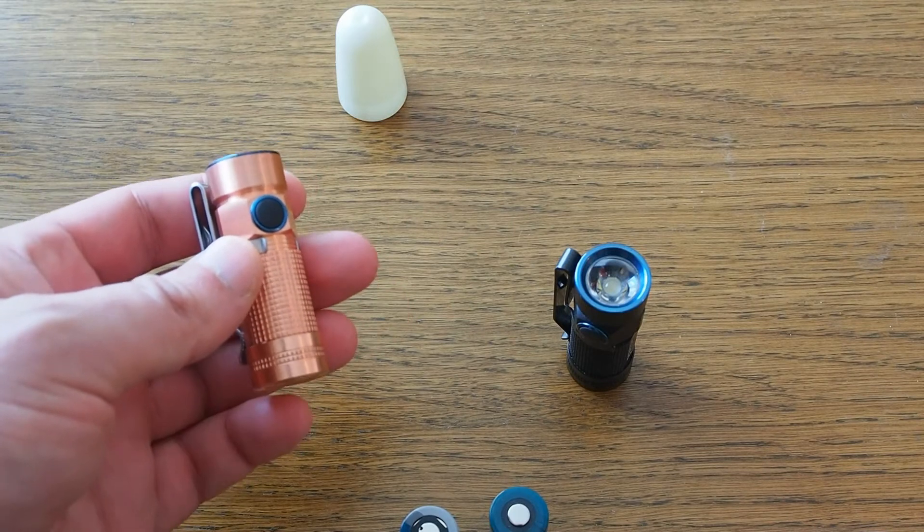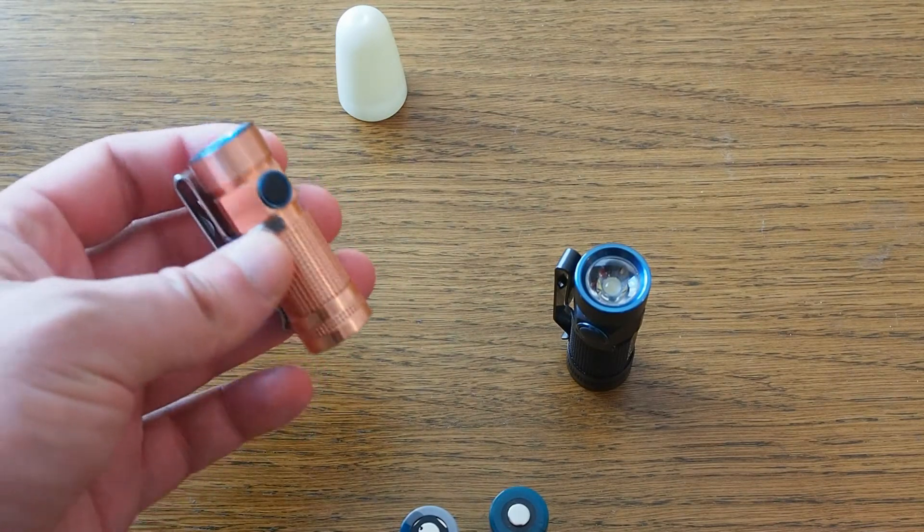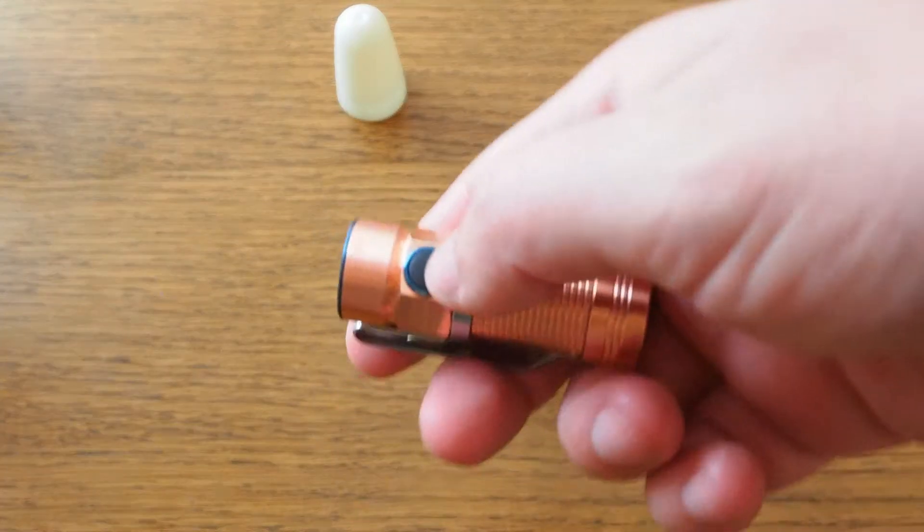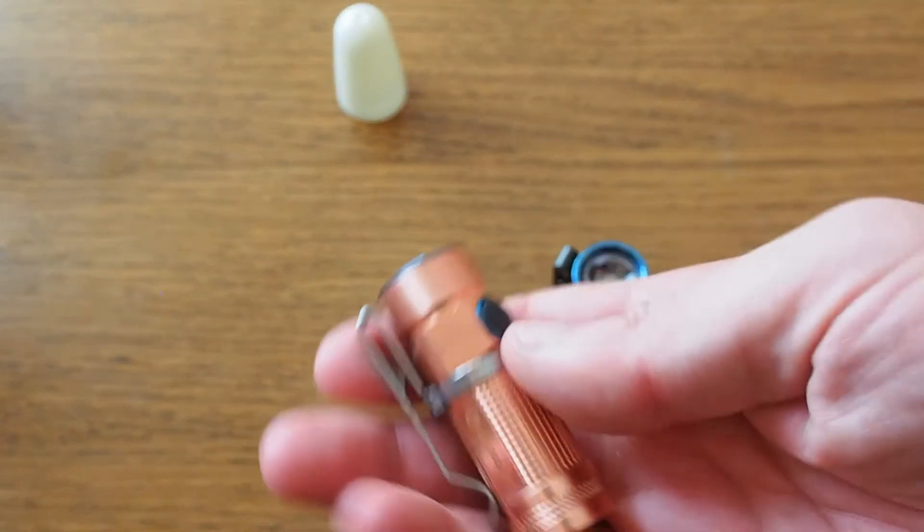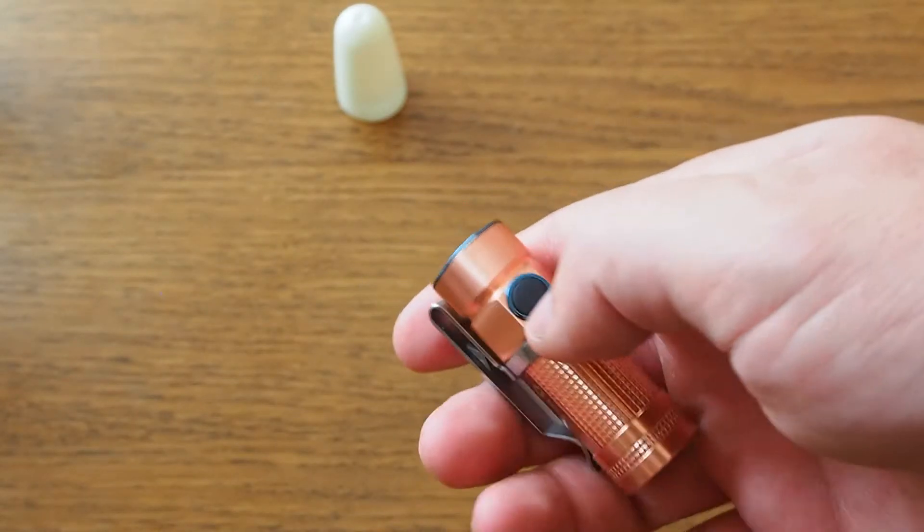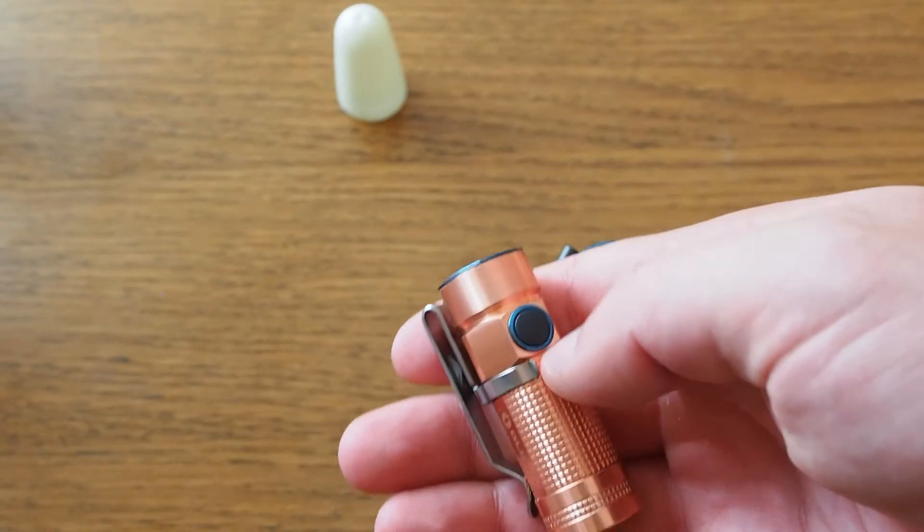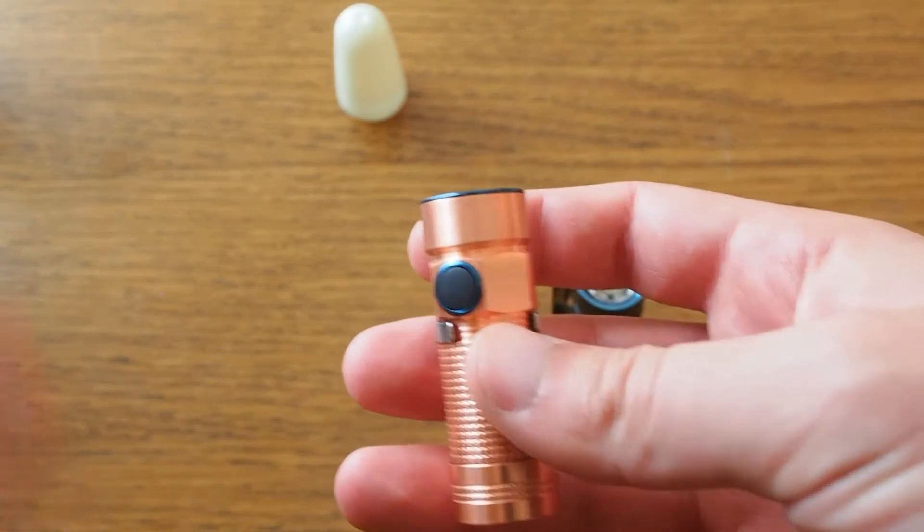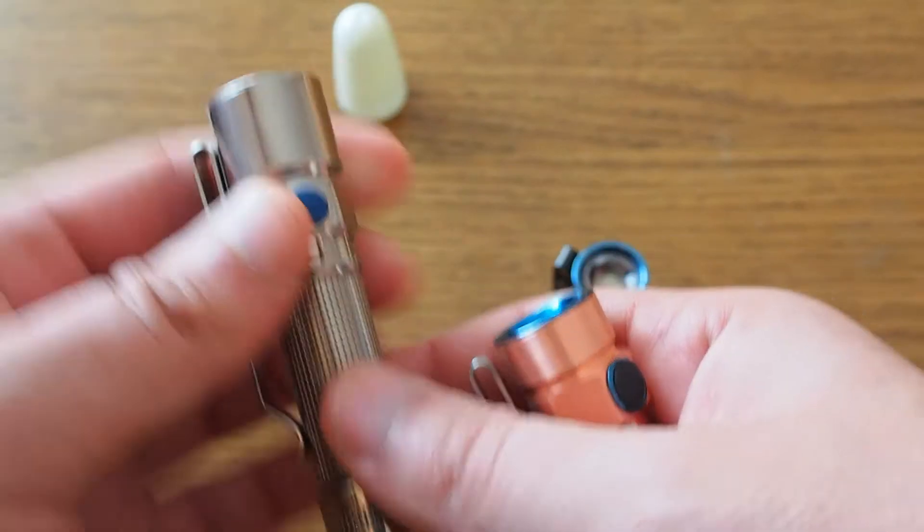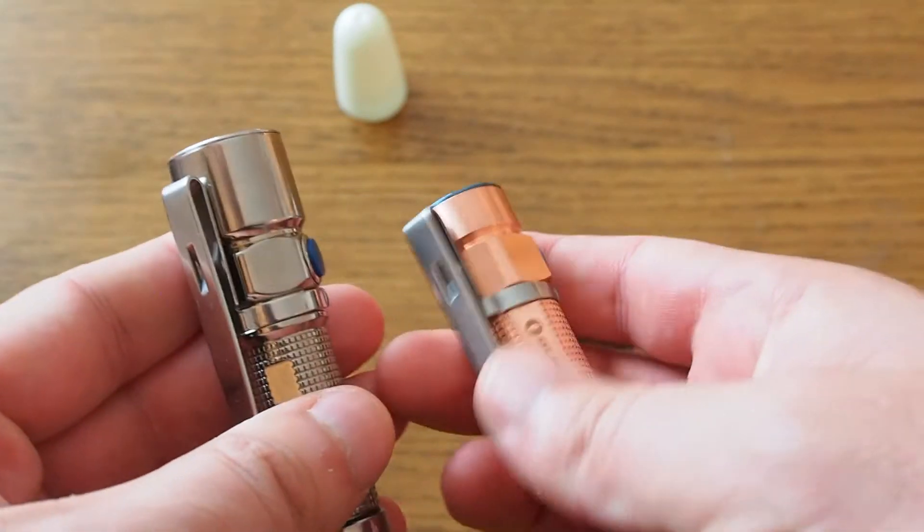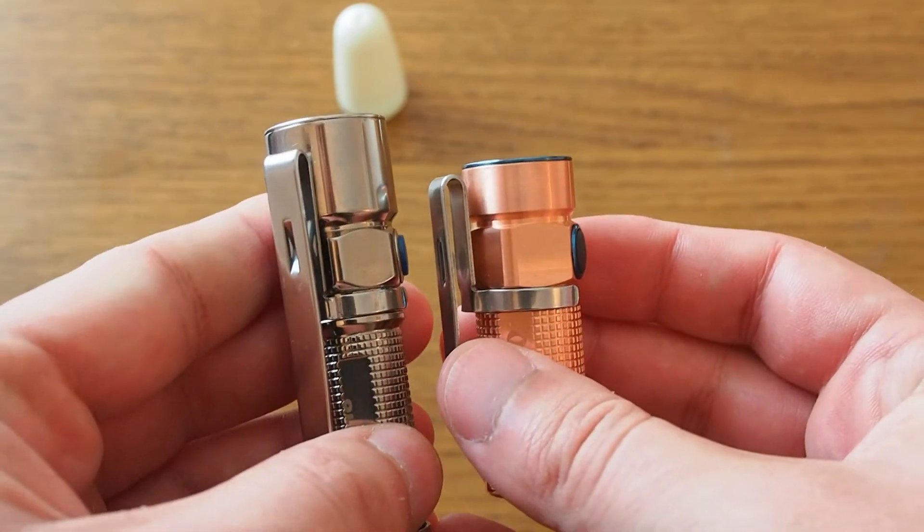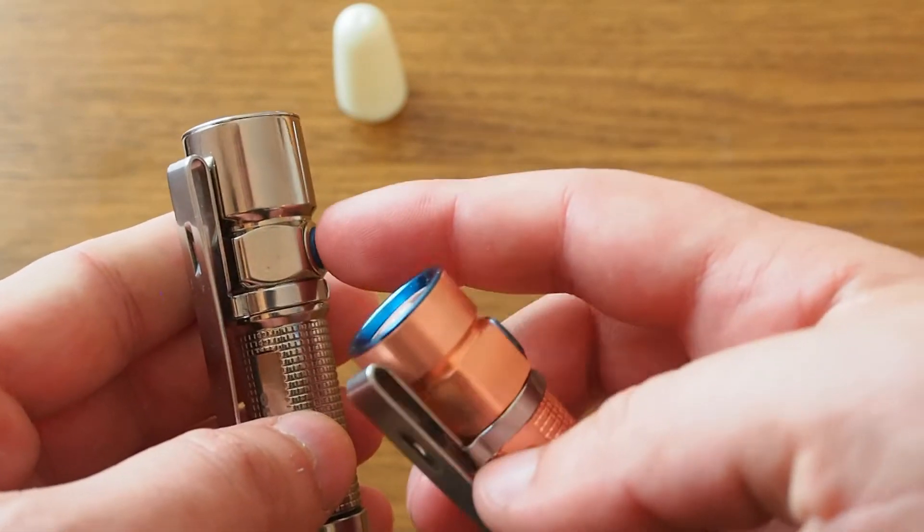Another problem that some people mention, which I cannot really share, is the switch button. It's a side switch, and it doesn't have a lockout mechanism. In my opinion, it doesn't really need one. Why? When you compare it, for example, to the S15 baton, let's put them both sideways. Here it sticks out more.